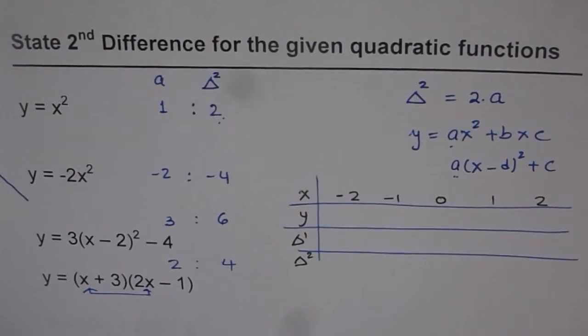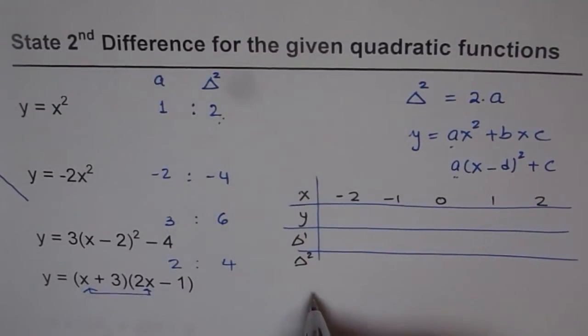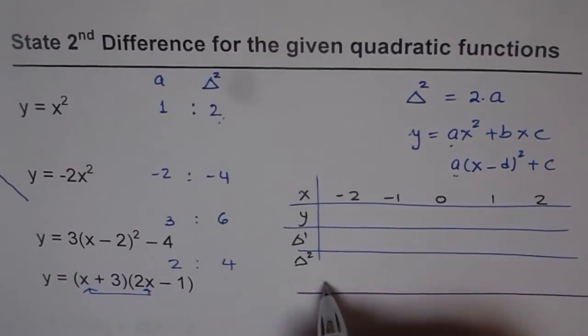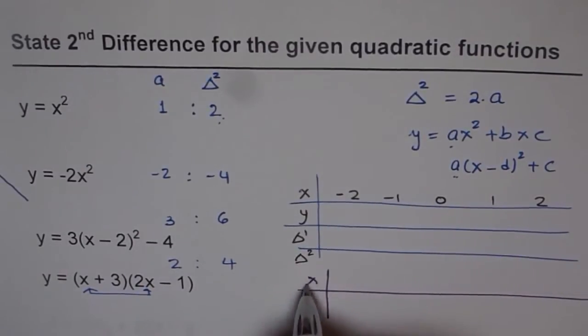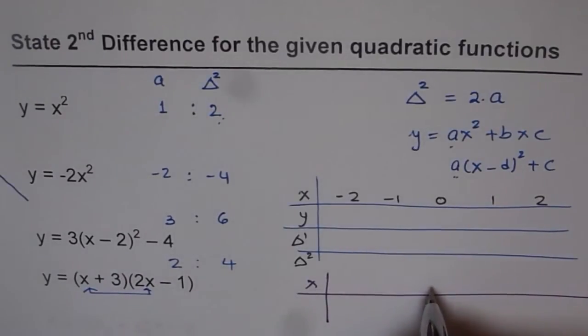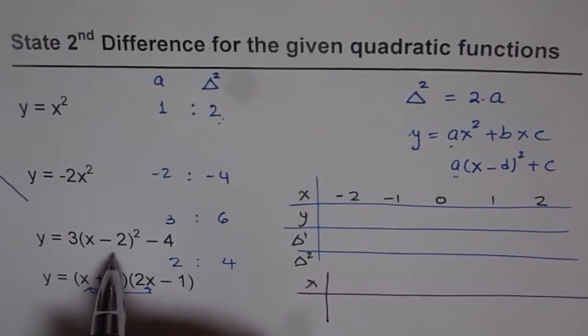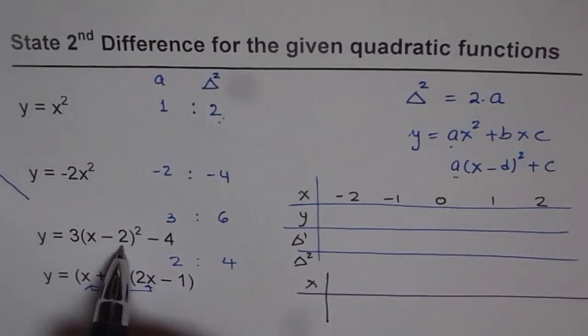Now in case you want to experiment and find out the second difference for such functions, your key value should be considered. The x values here should be close to the vertex. Vertex is at 2. So you should consider one side of 2 that is good enough. Because of symmetry we can take care of the other side also.